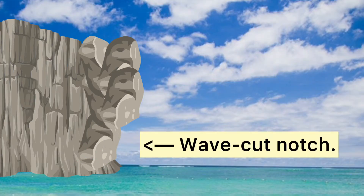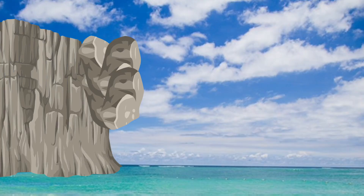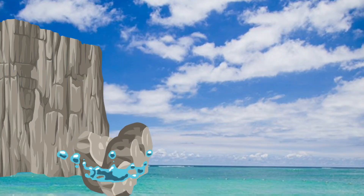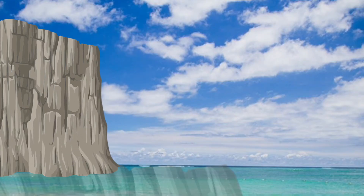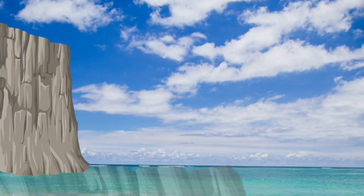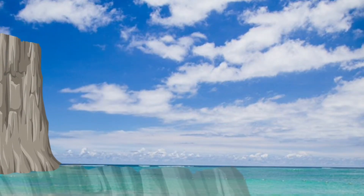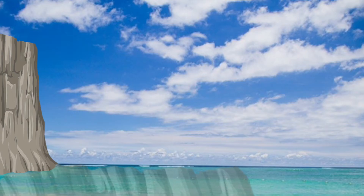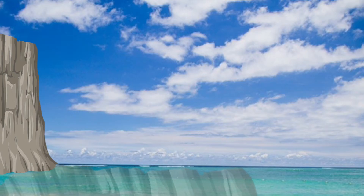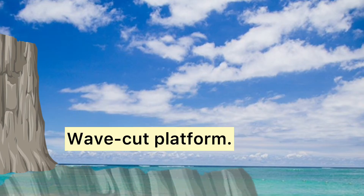This notch gets deeper through more erosion, to the point where the cliff can't support the rocks above, and it collapses. The cliff will slowly retreat through repeated notch development and collapse, and this will leave behind gently sloping land called a wave-cut platform.